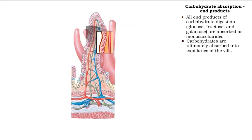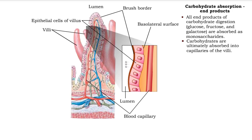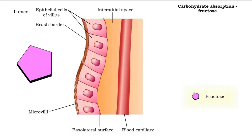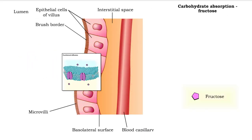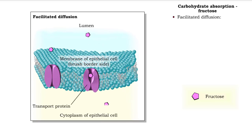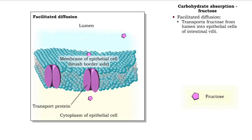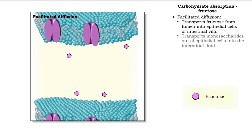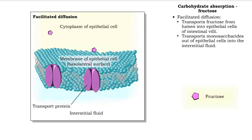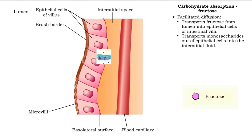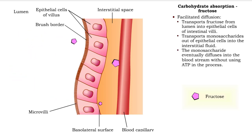Absorption of nutrients ultimately takes place in the capillaries of the villi. Fructose, a monosaccharide found in fruits, is absorbed by facilitated diffusion. Diffusion first takes place between the lumen and the epithelial cells of villi. Monosaccharides in an epithelial cell then diffuse through the cell's basolateral surface into the interstitial fluid, and eventually into the bloodstream. The process does not require ATP.